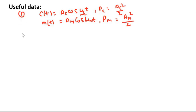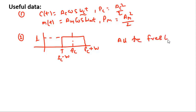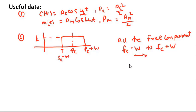The second useful data is the operation of a band pass filter. For an ideal band pass filter with center frequency fc, upper band at fc plus w and lower band at fc minus w with amplitude 1, all frequency components between fc minus w and fc plus w will be passed through. Frequencies less than fc minus w or greater than fc plus w will not pass through this band pass filter.